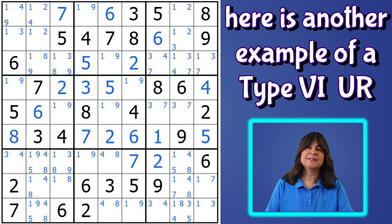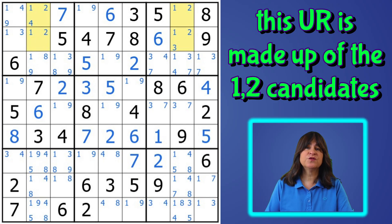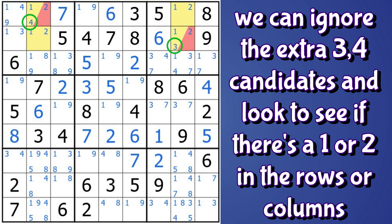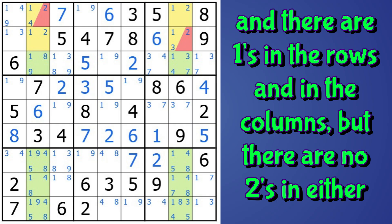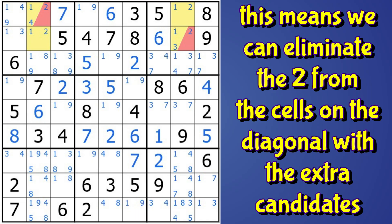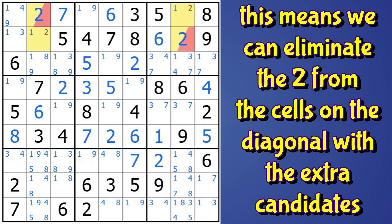Let's take a look at one more type six unique rectangle. Here, the unique rectangle is made up of the one and two in these four cells. They are in two rows, two columns, and two blocks. On the diagonal, we see the extra candidates — the three and the four — but we can ignore those and look to see if there's a one or two in the two rows and two columns that make up the UR. There are ones in the rows and in the columns, but there are no twos in either of the rows or the columns making up the UR. So the two can be eliminated from the diagonal cells with the extra candidates, because otherwise, if those two cells were twos, we would end up with a puzzle with more than one solution.